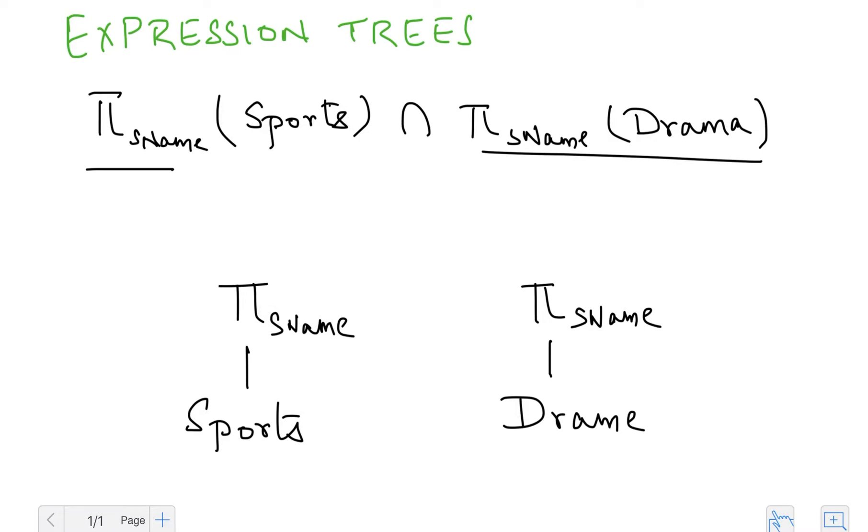And I'll have as the root the intersect relation and both of these would be children of this intersect relation. So this right here is my expression tree corresponding to the above query which gives me the names of students